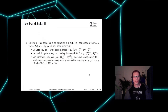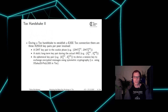During a TOX handshake, there are in total three X25519 key pairs involved. There is a key pair for the cookie phase — the DHT key pair. Then there is a static long-term key pair used during the authenticated key exchange; this public key is also included in the TOX ID. And there is an ephemeral key pair used to establish the session secret key, which is then used with symmetric cryptography.